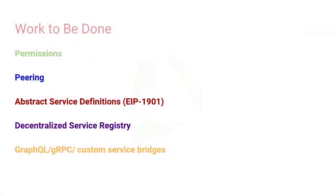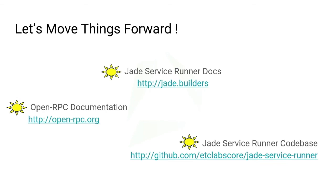So if you want to connect to Cosmos or something like that, you just point to the Cosmos registry, download the configs, and button click — you're done. We're also thinking about support for bridging between JSON-RPC and GraphQL, or between JSON-RPC and gRPC. I'd like to invite you to help us move things forward and build awesome tools that improve interoperability, help L2 scaling solutions, and really help us build a decentralized network. Check out our docs at Jade Builders, OpenRPC, and the Jade Service Runner codebase. Pull requests are welcome, and we're doing a workshop today — stop by and let's build.